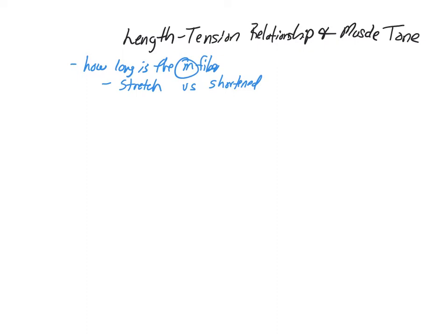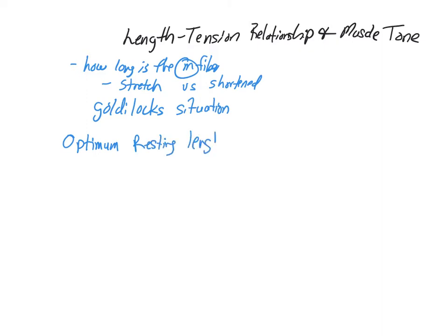If the muscle is too short before being stimulated, you get a weak contraction. If it's too stretched out before it's stimulated, you don't get enough cross-bridge formations. So it's kind of like a Goldilocks situation where you need to have the right relationship between the two — finding the optimum resting length before you begin the contraction, which leads back to the concept of muscle tone.